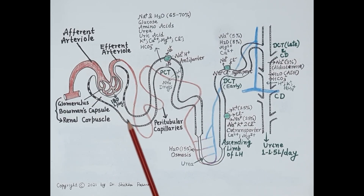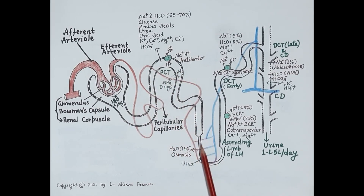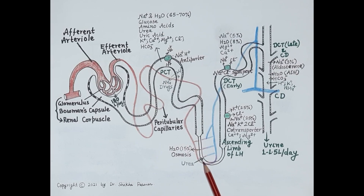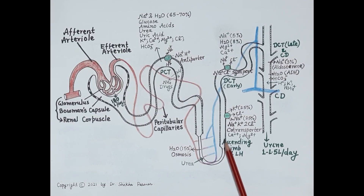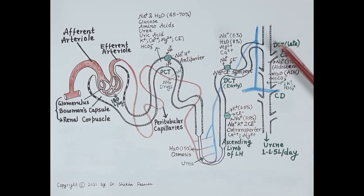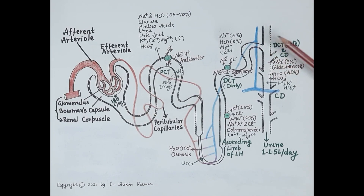Reabsorption occurs at different sites: in the proximal convoluted tubule, 65 to 70 percent of sodium and water is reabsorbed; in the descending loop of Henle, 15 percent of water is reabsorbed; in the ascending limb of the loop of Henle, around 25 percent of sodium is reabsorbed; and in the early distal tubule, around 5 percent of sodium and 8 percent of the water content is reabsorbed.